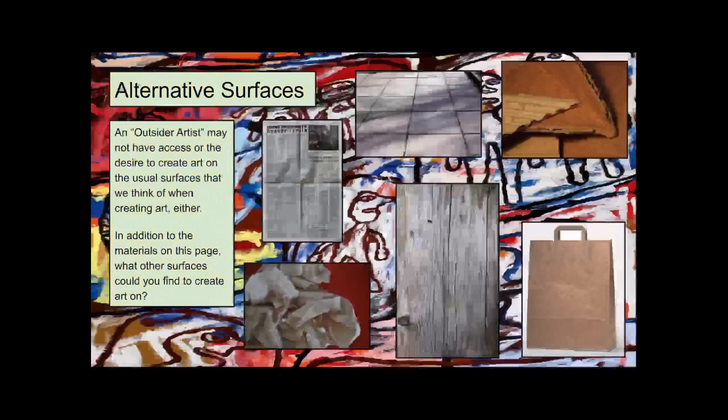Alternative surfaces. An outsider artist may not have access or the desire to create art on the usual surfaces we think of when creating art. What other surfaces could you find? Maybe you're going to make art on newspaper, fabric, or a little scrap of wood. Maybe a paper bag is your canvas, or some cardboard, or even the sidewalk outside on a nice day.